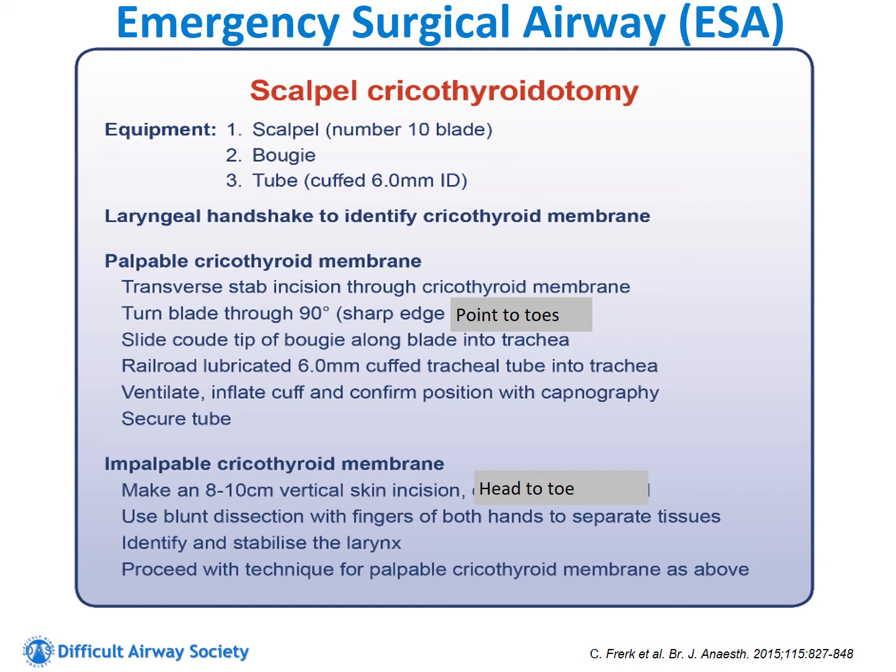If you can't palpate the cricothyroid membrane, make a vertical incision 8 to 10 centimeters from head to toe, then bluntly dissect down through the tissue so that you can clearly identify the cricothyroid membrane.